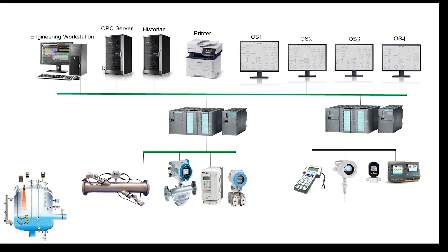SCADA normally comprises an engineering workstation where you have software to program SCADA screens, and you can also write scripts for specific processes. Then you might have an OPC server, which helps you connect to third-party devices. You also have historians to store historical data — so you can look back years at process variables. There's also a printer for trends and mimics, and operator stations where operators visualize information coming from the process.